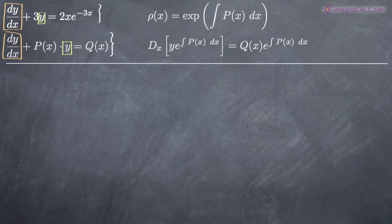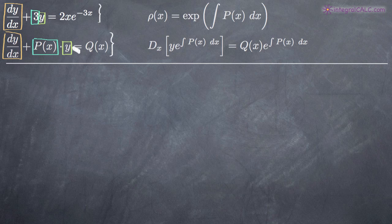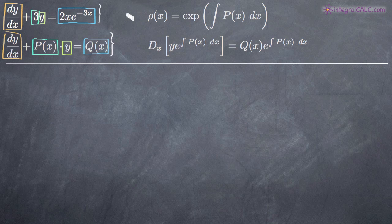The y term can be multiplied by anything you want — it can have an x variable, but it just needs to be either a constant or have an x variable. It can't have a y variable, because that would make the term like y squared or y cubed. So that 3 in our original problem is going to be p(x), which is essentially the coefficient on the y term. Then on the right-hand side, you've got q(x), which can be any function of x or a constant, as long as it doesn't have a y variable. Our right-hand side satisfies those requirements — we have x variables but no y variables. So we can confirm we are dealing with a linear differential equation.